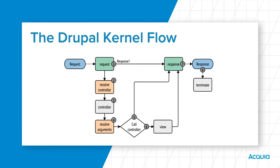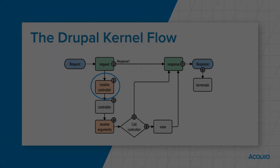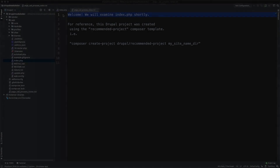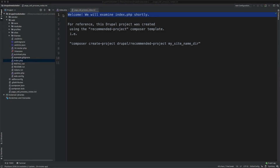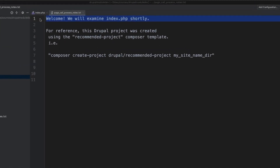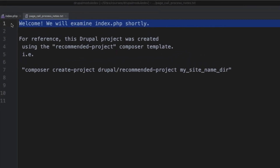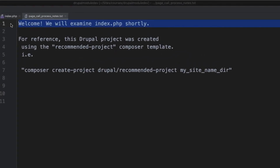For now, notice that at step two, most reasonable client requests are resolved — that is, routed — to a controller. So now that we have learned about Symfony, let's see it in action by looking at the code of index.php. Remember, Drupal's page callback process is always initiated inside the index.php file.